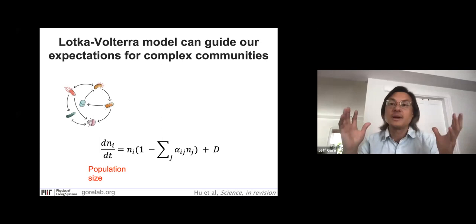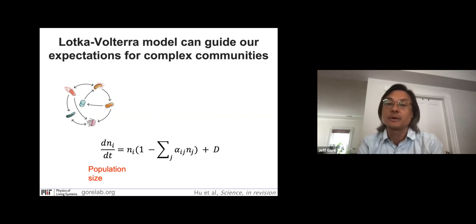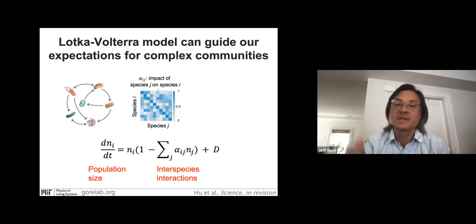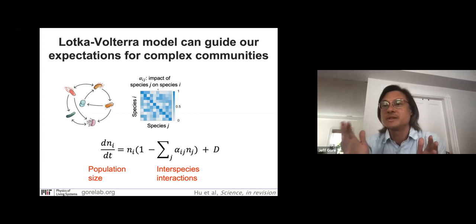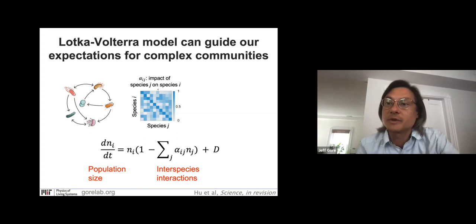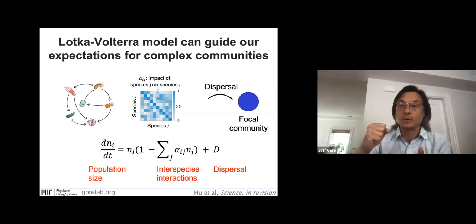I'm going to start by laying out some of the expectations from the canonical theory within this field, which is the generalized Lotka-Volterra model. We have some number S of species, where the Ni are just the population sizes for the ith species. The key assumption of this Lotka-Volterra model is that it's basically a Taylor series expansion, where the per capita growth rate of each species is just a linear function of the abundances of each species in the community, including the species' interactions with itself. Each entry between different species is just a random independent sampling over a uniform distribution from zero up to some strength of inhibition. And we're imagining a particular community that has some dispersal of individuals from the outside world, so each of the S species will have some low rate of dispersal.